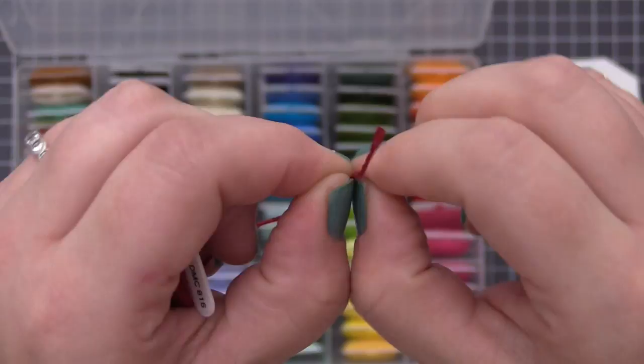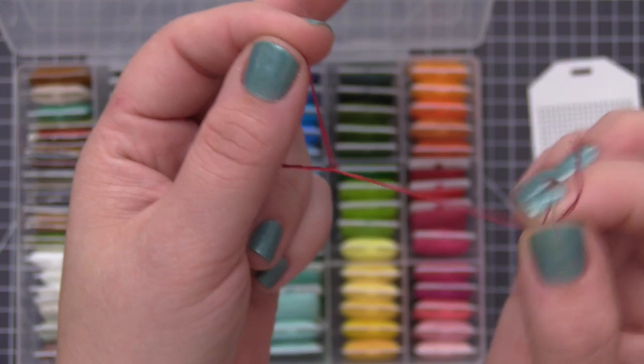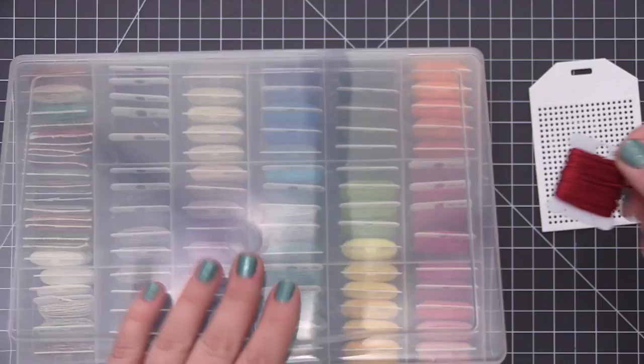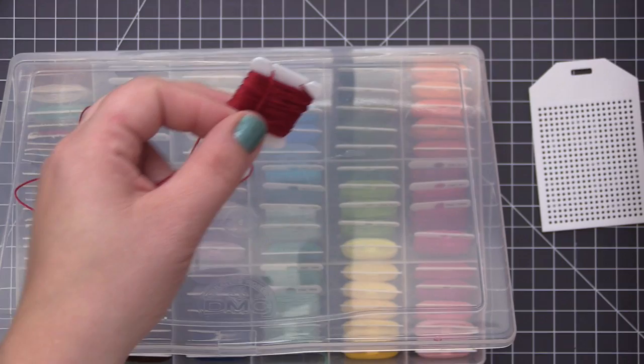This is DMC six strand thread, and I like to use three strands at a time. You can get single DMC thread which is a lot thicker, but I like the six strands so that I can decide how thick I want my thread when I'm sewing different projects. I'm just removing some of the red thread here so that we can use it in the video. I like to tuck the thread back into the bottom area here. This just helps keep everything straight and not tangled.